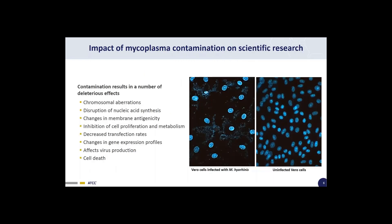What are the scientific impacts of mycoplasma contamination? Once mycoplasmas infect your culture, they compete with the host cells for nutrients, and this can cause many damaging effects. Contamination can cause chromosomal aberrations, disrupt nucleic acid synthesis, inhibit cell proliferation and metabolism, decrease transfection rates, and even cell death. Since the bacteria cannot be visualized by the naked eye or a standard microscope, these changes may go undetected for some time. As you can see in the Hoechst stain image, the small stains on the left show a mycoplasma-infected cell line, while the photo on the right shows a mycoplasma-free cell line.